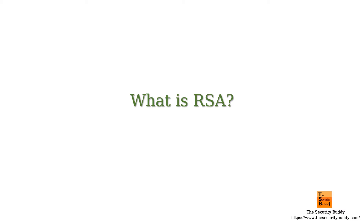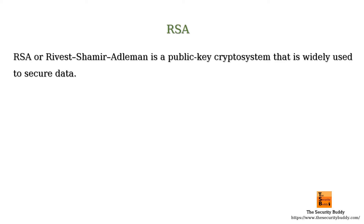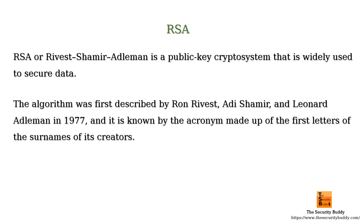What is RSA? In this video, we will learn that RSA, or Rivest-Shamir-Adleman, is a public key cryptosystem that is widely used to secure data. The algorithm was first described by Ron Rivest, Adi Shamir, and Leonard Adleman in 1977, and it is known by the acronym made up of the first letters of the surnames of the creators.